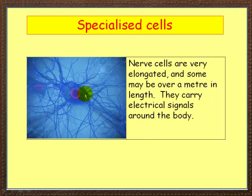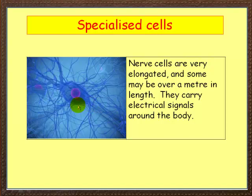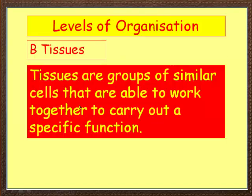Here we've got nerve cells. Nerve cells are very specialized and very elongated — some may be over a meter in length, perhaps from your big toe to your spinal cord. They carry electrical signals all around the body.